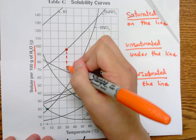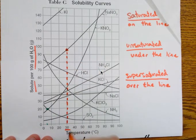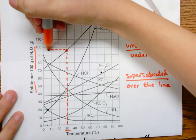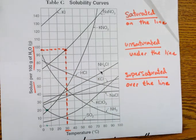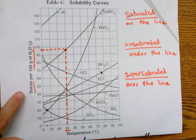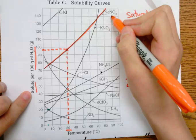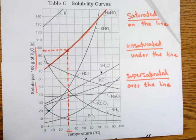By drawing a straight line down, I can see what temperature I'm dealing with. This is a solution made at 30 degrees Celsius. Going over to the y-axis, this solution has about 97 grams of solute — so 97 grams of NaNO3, sodium nitrate, at 30 degrees in 100 grams of water will fully dissolve. That's a saturated solution.